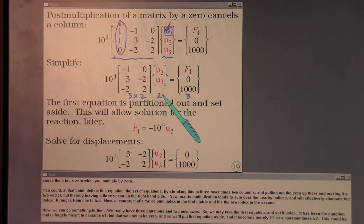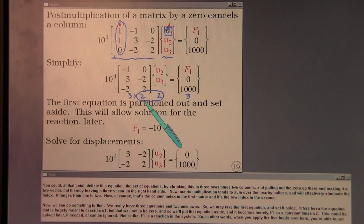Now, matrix multiplication tends to sum over the nearby indices and will effectively eliminate the index that ranges from one to two. Of course, that's the column index in the first matrix and it's the row index in the second.